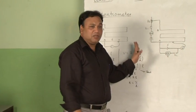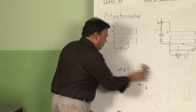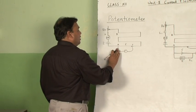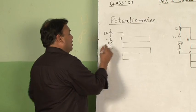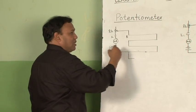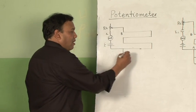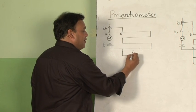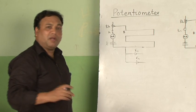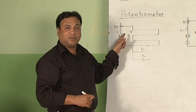The two applications of the potentiometer given in the syllabus will be explained using the circuit drawn here with some modifications. In the first application, if I have a cell of EMF E1 and another cell of EMF E2, I want to compare the EMFs of these two cells using a potentiometer circuit diagram.